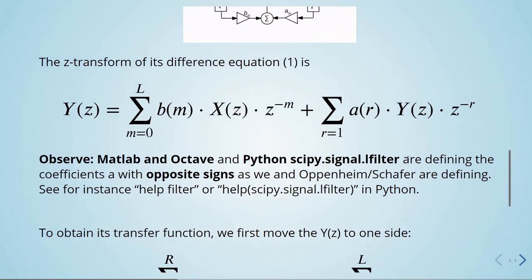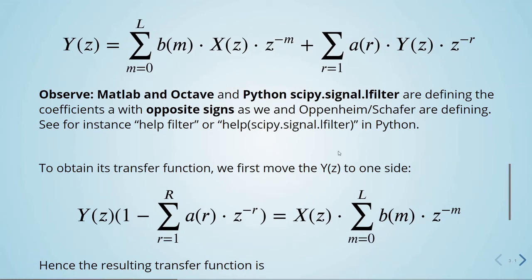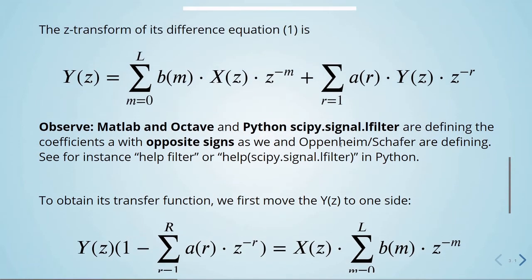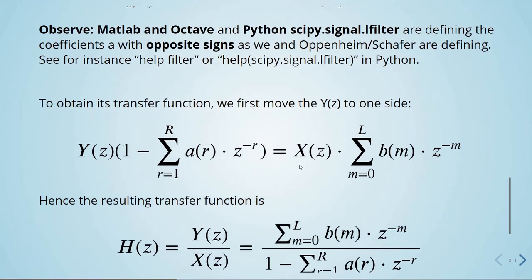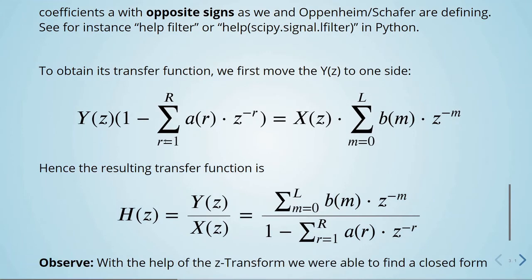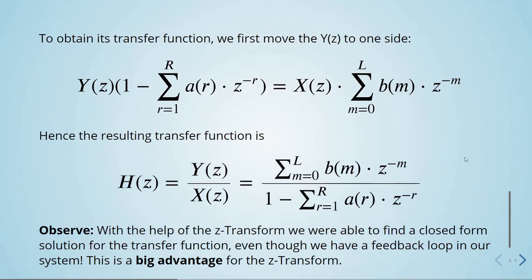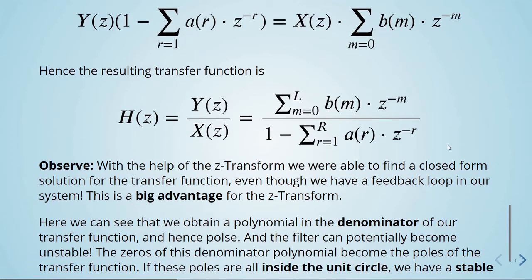To obtain the transfer function, we first need to move y of z to the other side. We have y of z and x of z, and then we take the transfer function by dividing the output by the input, giving us the resulting transfer function. We have this sum in the numerator divided by one minus another sum in the denominator. Observe that with the help of the z-transform, we are able to find a closed-form solution for the transfer function even though we have a feedback loop in our system — this is a very big advantage of the z-transform.